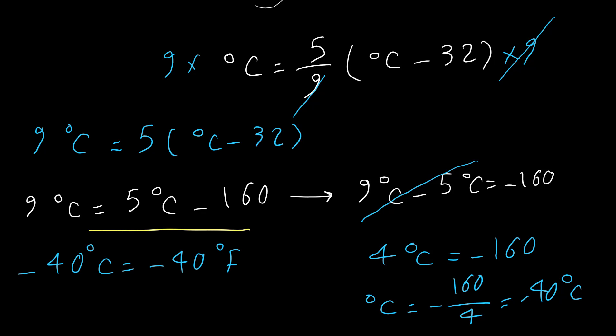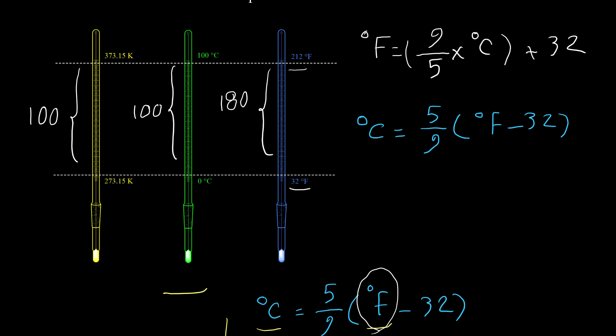To convert between Fahrenheit and Kelvin, I recommend always using Celsius as the intermediate step. If you have Kelvin, convert to Celsius first, then use the Fahrenheit equation. If you have Fahrenheit, convert to Celsius first, then to Kelvin. This is easier than memorizing a direct formula. Thank you for watching — please subscribe to our YouTube channel for more videos.